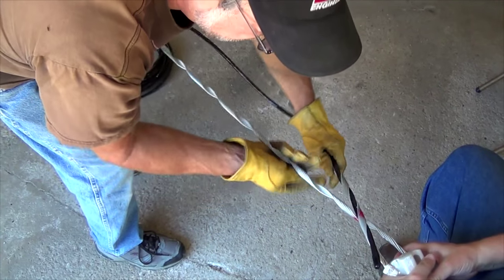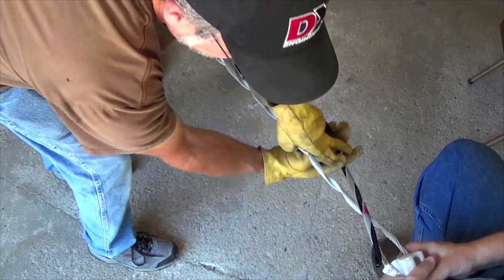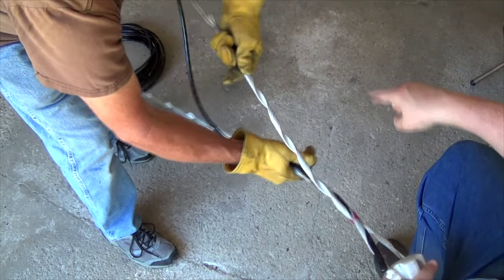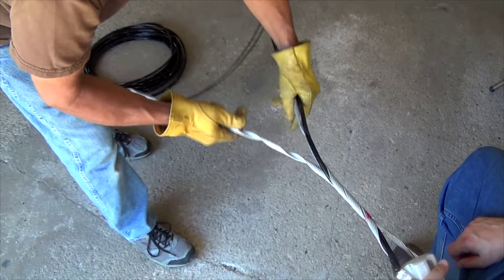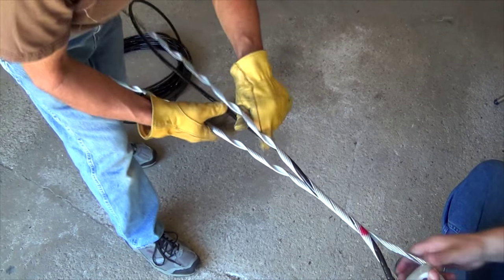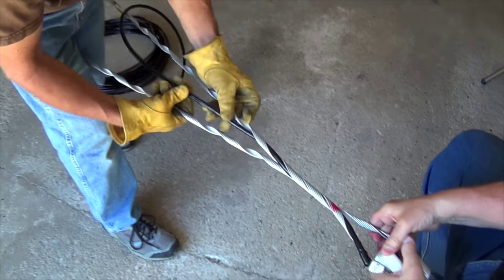Bring the long end over and you kind of pull it up and over and wind it on top of the Philly string. Keep working that on down.